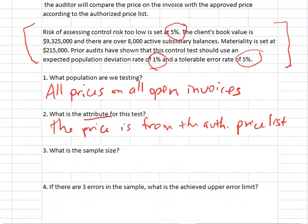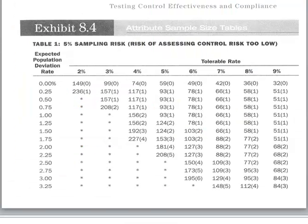So how many invoices should we test? Well, if we're going to do statistical sampling by hand, we have to use tables. And in your book, this is exhibit 8.4. So here's exhibit 8.4. In your book, you'll see that there's a top half and a bottom half to this table. The top half is for 5% risk of assessing control risk too low, and the bottom half is for 10%. So let's use the 5% half.